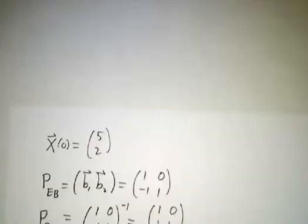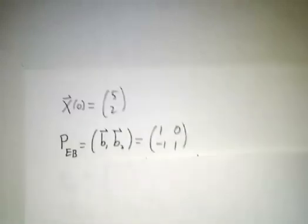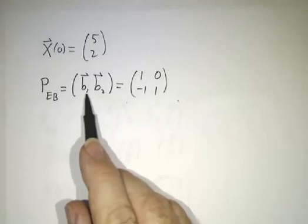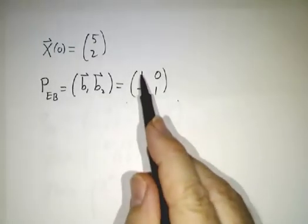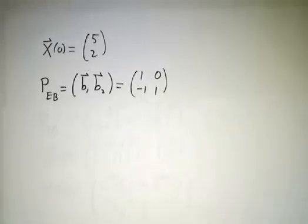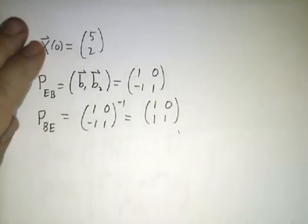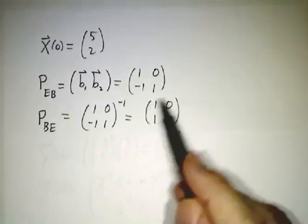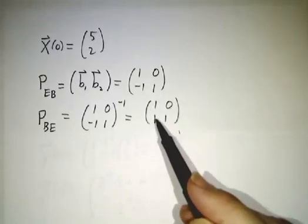So now we put it all together. In our case, our initial value was 5, 2. Our change of basis matrix was the first basis element, the second basis element. It's invertible. And the inverse looks pretty similar to the original matrix, just with a plus instead of a minus.